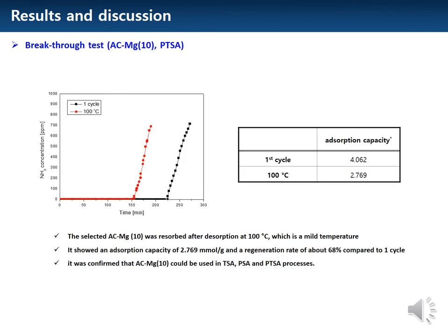The highest ammonia adsorption capacity was achieved by ACMG10. ACMG10 was performed in the PTSA process, which reabsorbed after desorption at a mild temperature of 100 degrees. It showed an adsorption capacity of 2.769 mmol per gram and a regeneration rate of about 68 percent compared to the first cycle. It was confirmed that ACMG10 could be used in TSA, PSA, and PTSA processes.